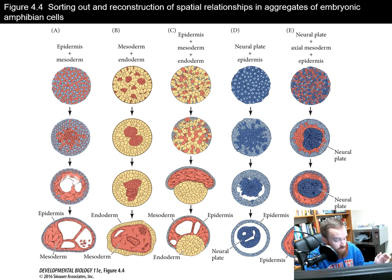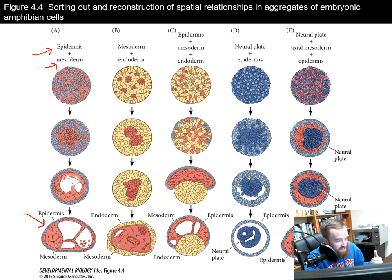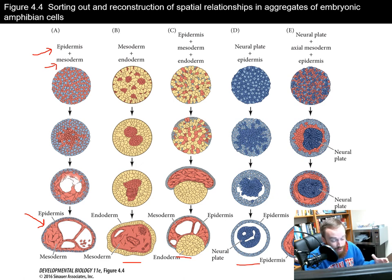This selective affinity held true for multiple tissue types. With combinations of epidermis, mesoderm, and endoderm, there is a positive affinity between the ectoderm or epidermis and the mesoderm, so the epidermis wants to be on the outside of the mesoderm. There is a negative affinity between the epidermis and the endoderm, since the mesoderm should be in between. These tissues show a self-organizing property based on their receptors and ability to recognize their neighbors.